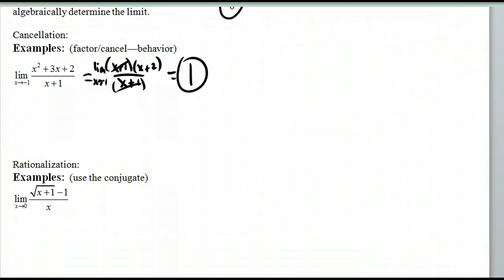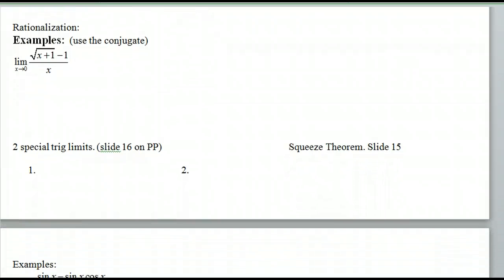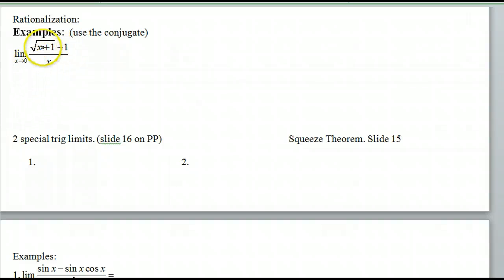We also have something that's called the rationalization technique. This is for when we have radicals, and we want to try to get rid of some of these radicals so we can evaluate it. First of all, let's make sure we get zero over zero. If I plug in zero through direct substitution, I get one minus one. Yep, that's zero over zero. So, what we do instead then is we go ahead and multiply by the conjugate. Conjugates are just, if I have a plus b, the conjugate would be a minus b. So, in this situation, this is my a, this is my b. So, I'm going to multiply top and bottom by the conjugate.